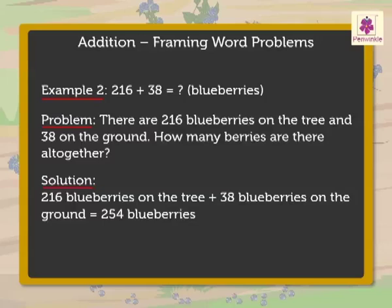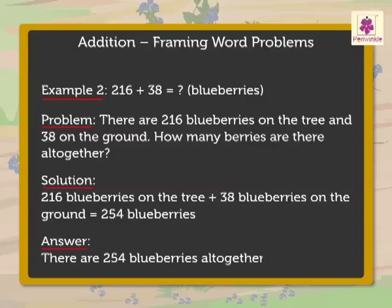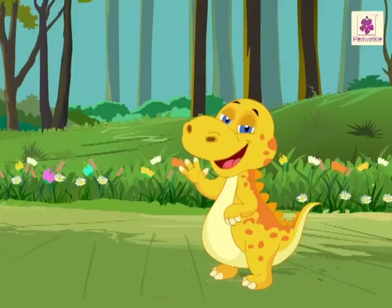Look, we found the answer. There are 254 blueberries all together. Hope you had fun learning with me.